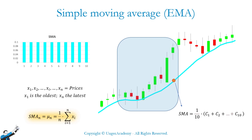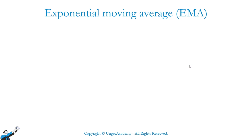Here above you can see the weights of the closes. However, the MACD indicator is not built using the Simple Moving Average, but using the Exponential Moving Average. So what is the Exponential Moving Average? And above all, what's the difference between the Simple and the Exponential Moving Averages? We just said that in the Simple Moving Average, all the closes have the same weight — W, where W stands for weight, is equal to the weight of the previous bar, the weight of the bar n-1, and so on.